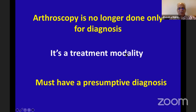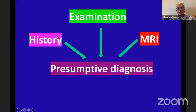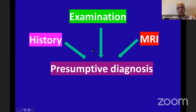How do you get to a presumptive diagnosis? By history, examination, and MRI. Only when all three match does the patient deserve going on the operation table. Taking history is very tricky — patients talk in local language and you must understand what your patient is saying. For example, 'locking' for you may mean a locked knee, but for the patient it may mean a certain mechanical disturbance, so we can misunderstand and our thinking goes in the wrong direction.